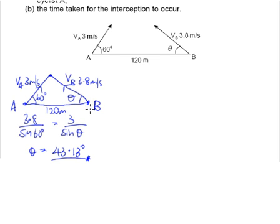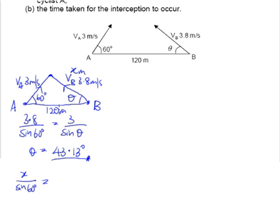Now we have a distance — initially they are some distance apart. To find the actual distance that B has to travel, we'll call it X meters. Using our sine rule, X over sine 60 degrees equals... we do need this third angle. Knowing theta is 43.13 degrees and this angle is 60 degrees, the third angle is 180 minus 60 minus 43.13, which gives us 76.87 degrees.